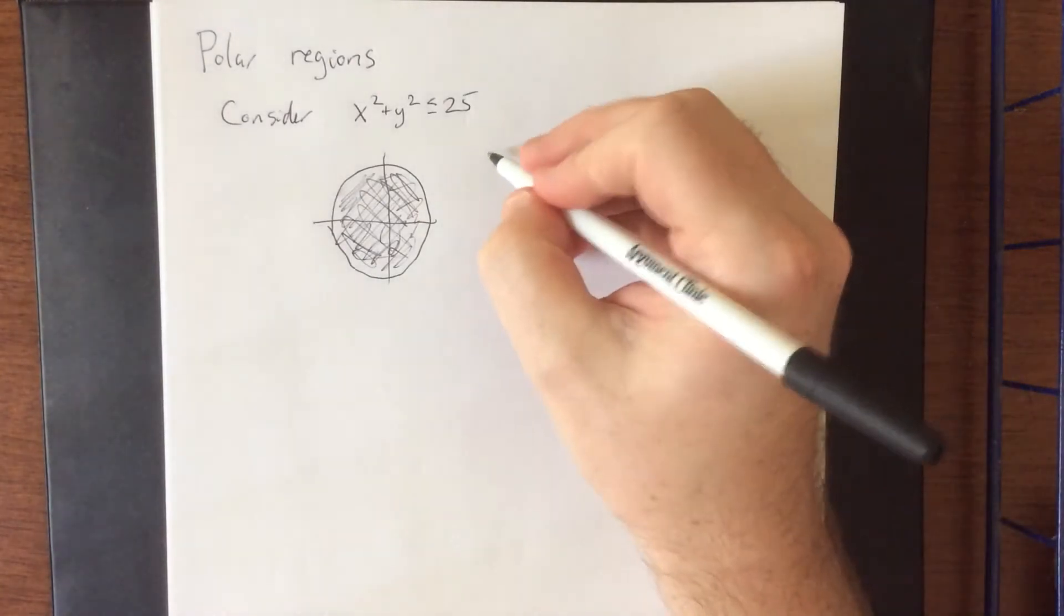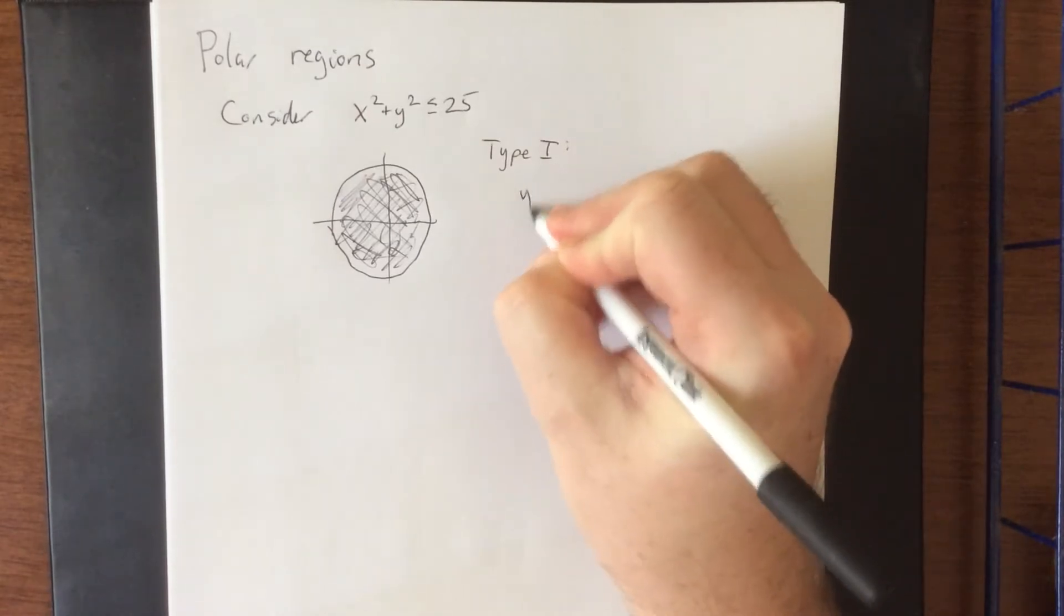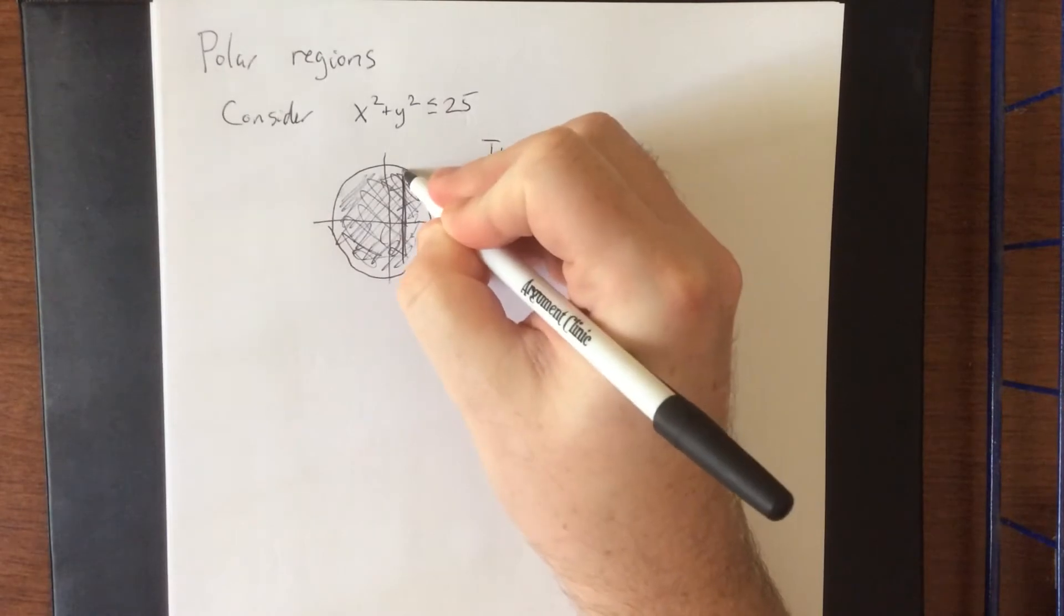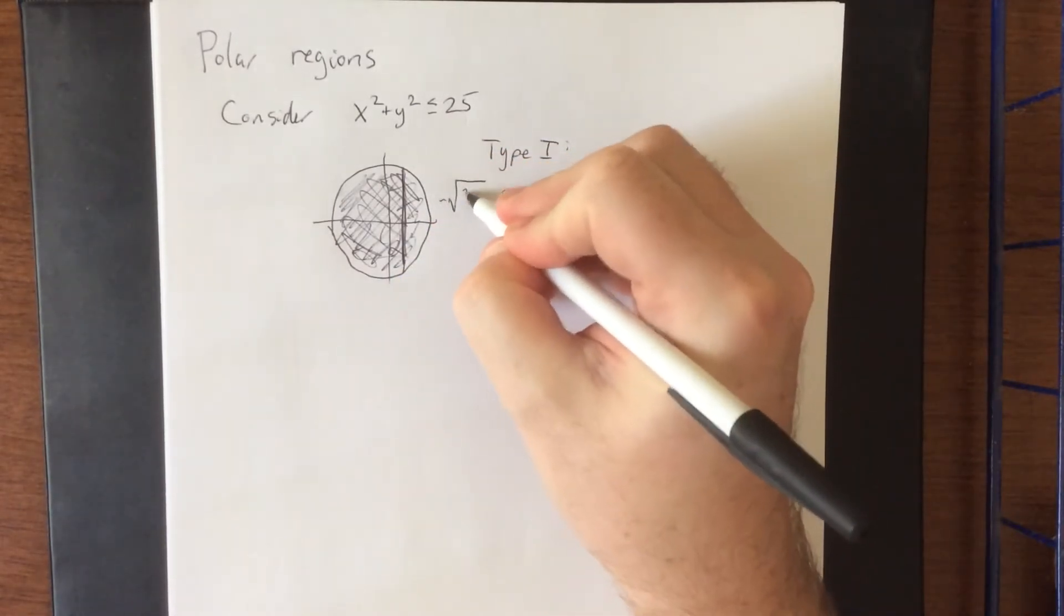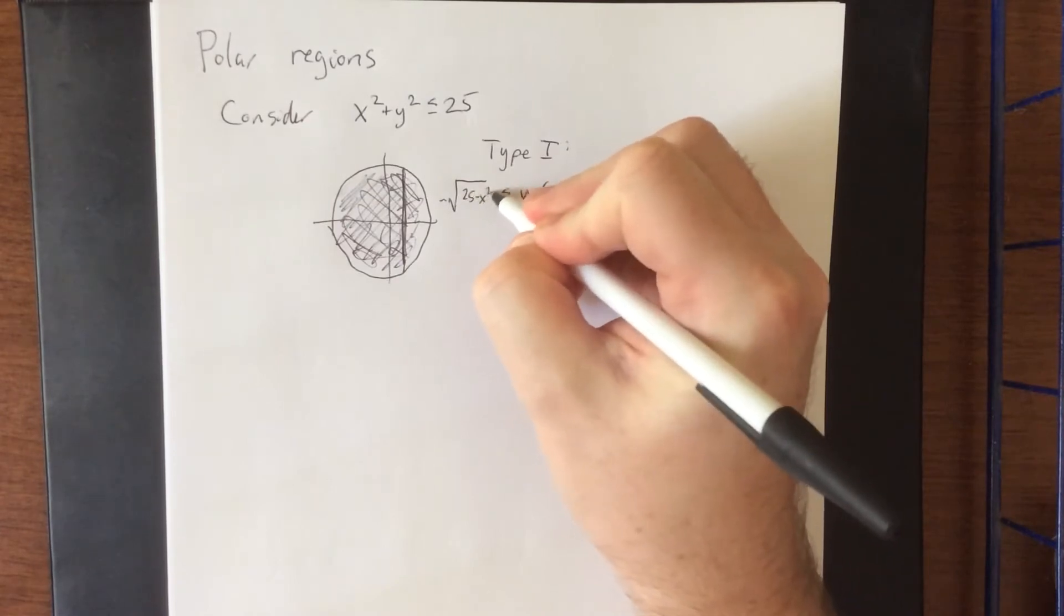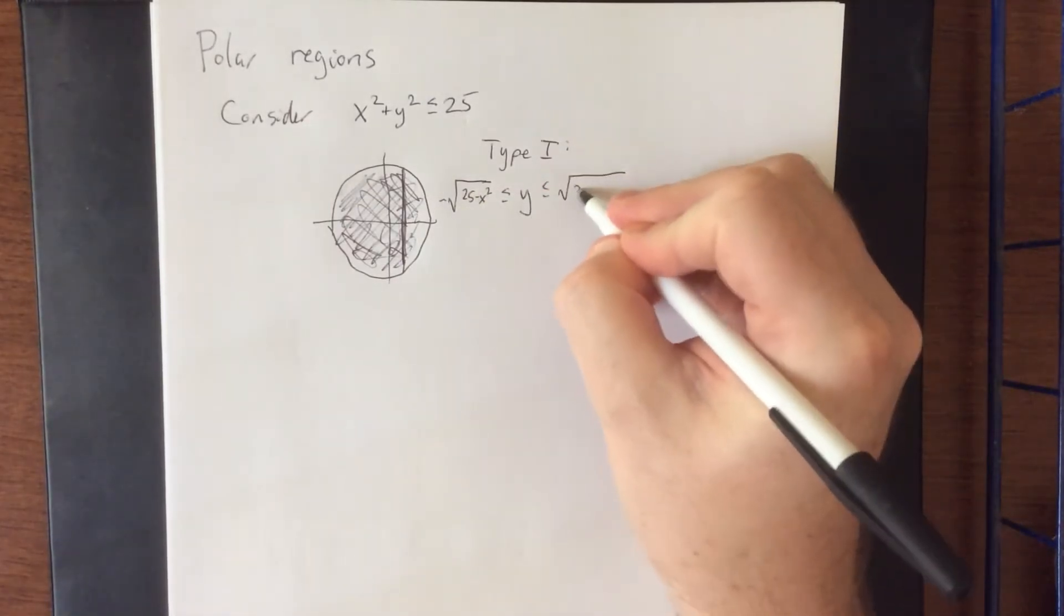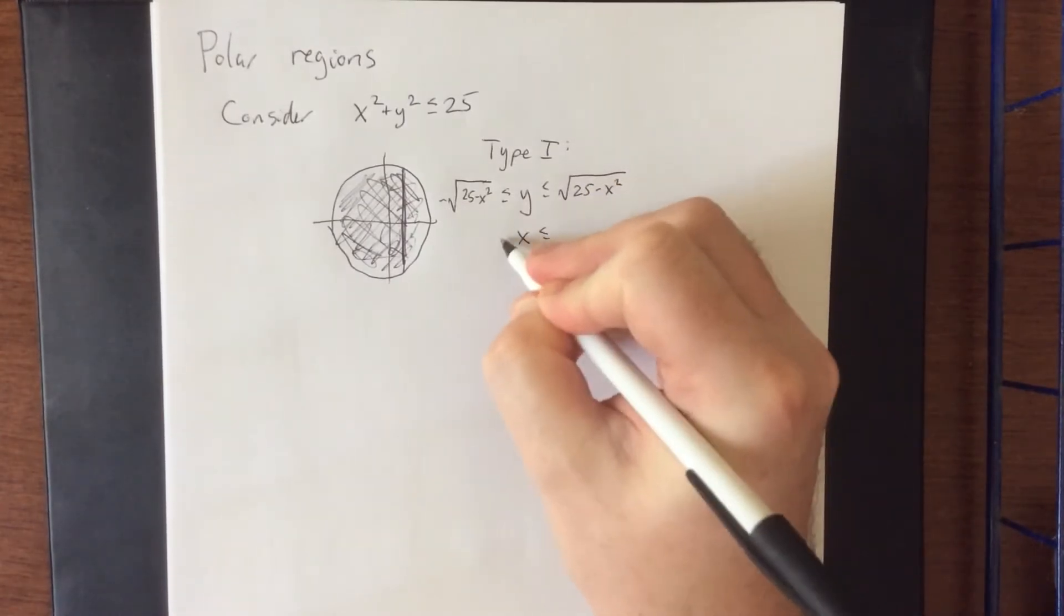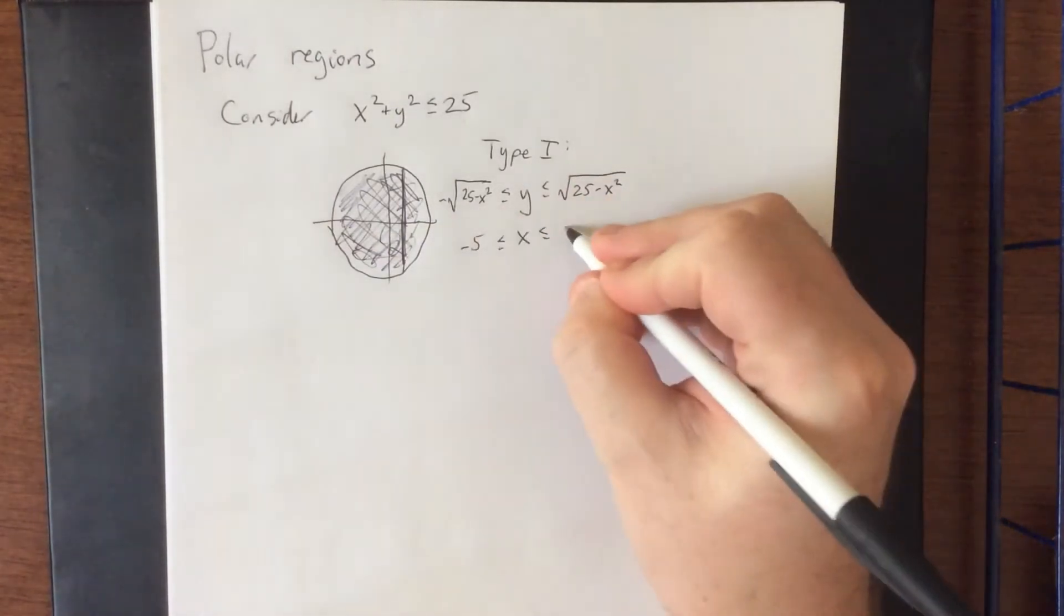If we wanted to consider this region as being type 1, we technically could. From top to bottom, this thing is bounded above by the upper half of the circle and below by the bottom half of the circle. Solving for y would give us the negative square root of 25 minus x squared all the way up to the positive square root of 25 minus x squared. Then x would go from extreme point to extreme point, which would be from negative 5 to positive 5.